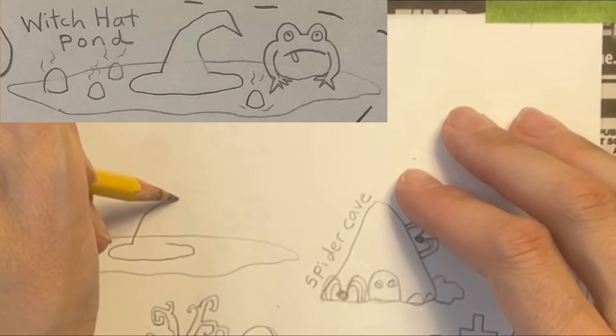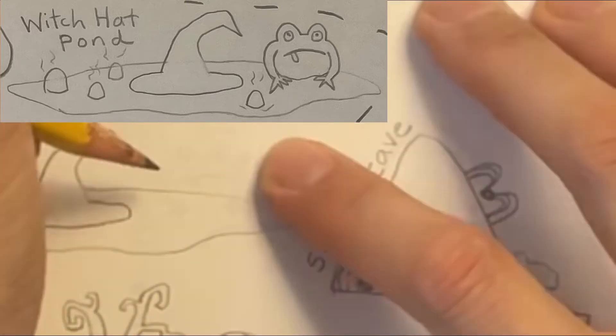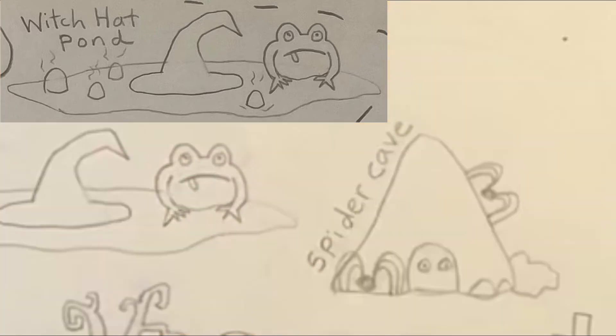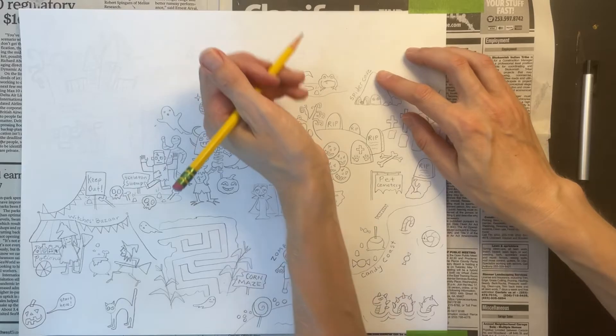I start with a wavy oval shape. Then I'm drawing a witch's hat right in the middle of the pond because I'm going to call this Witch Hat Pond. I'm drawing a big toad on the right and I'm adding some bubbles bubbling up to the surface of the water.